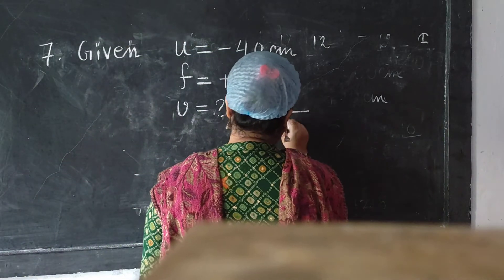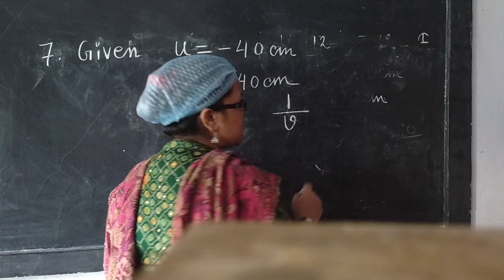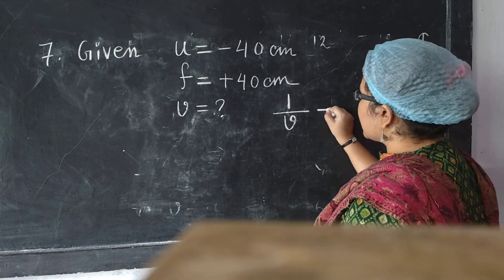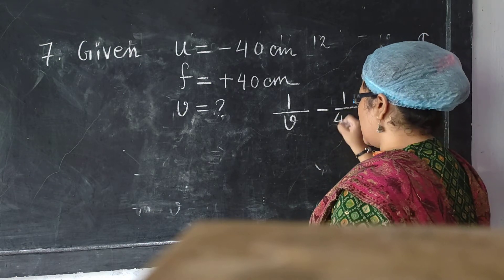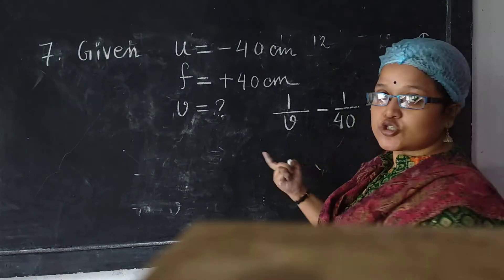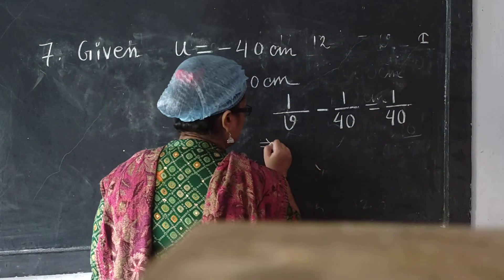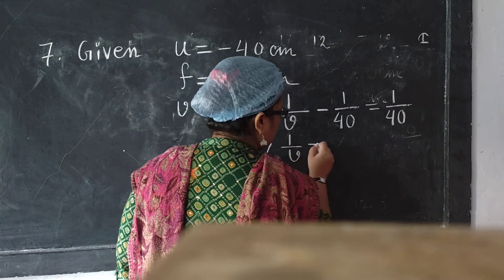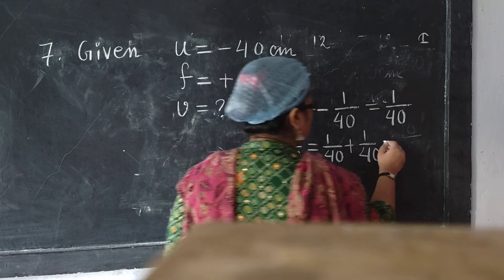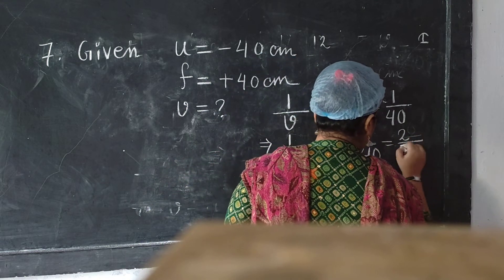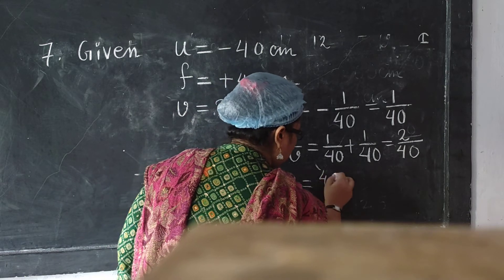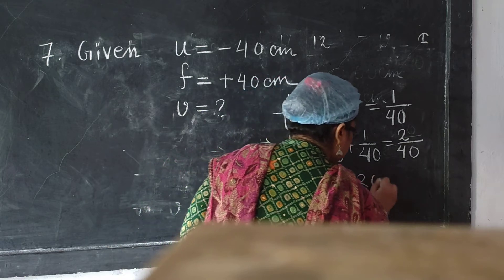Applying the mirror formula: 1/V minus 1/u equals 1/f. For the convex mirror, V will be positive because the image forms behind the mirror. So 1/V minus (1/−40) = 1/40, which gives 1/V = 1/40 + 1/40 = 2/40. Therefore V equals 40/2, that is equal to 20 cm.